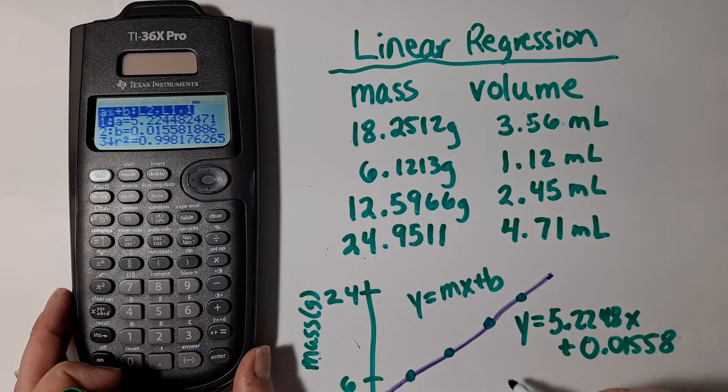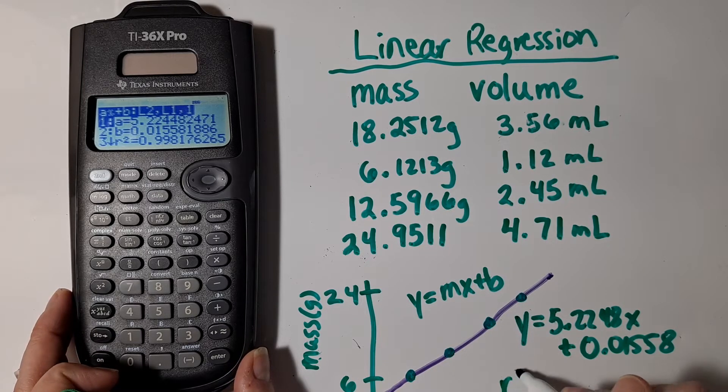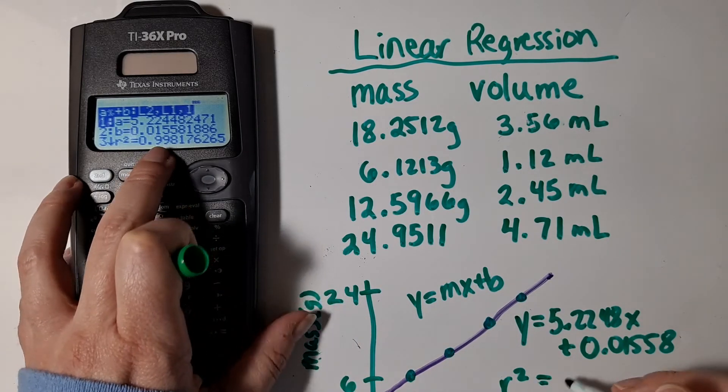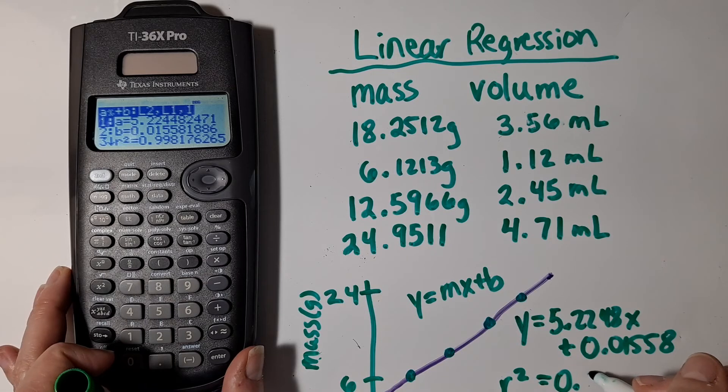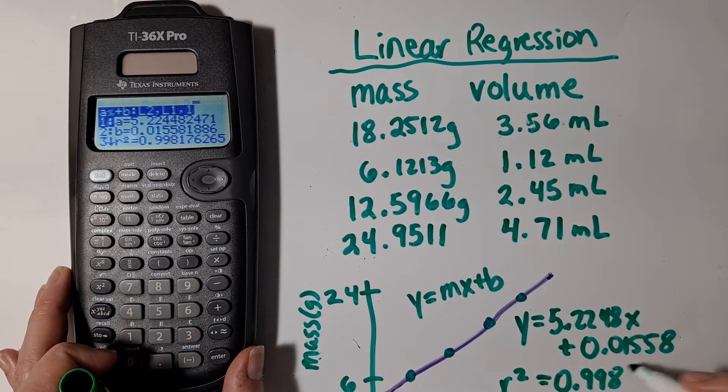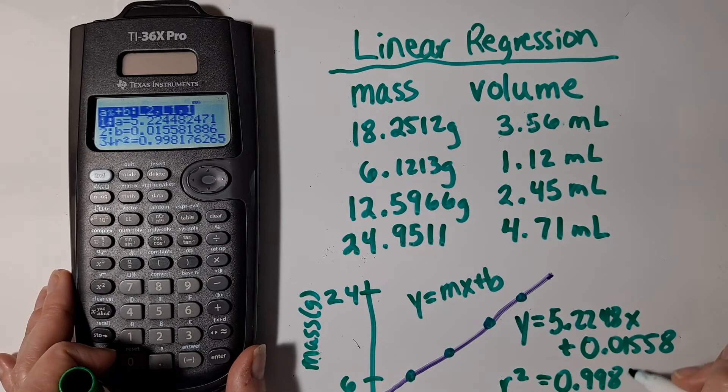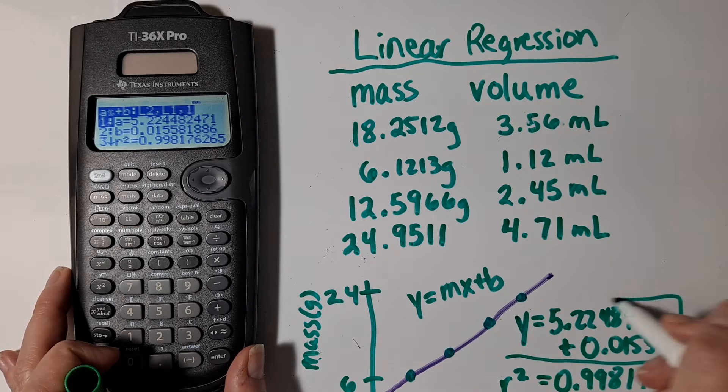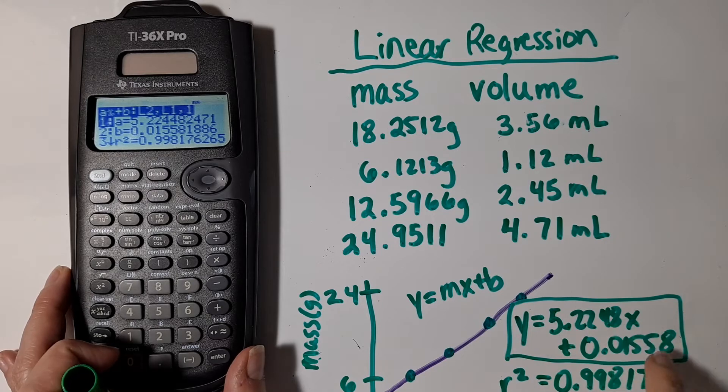And then the R squared for that equation of the trend line, that's a statistical value that tells you how good your line fit is with the maximum value being one. So that's not necessarily part of your trend line, but that's the equation of the trend line.